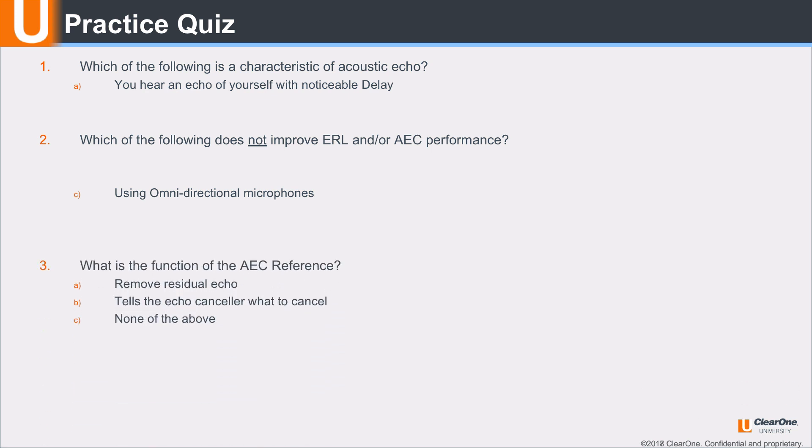Third question. What is the function of the AEC reference? The correct answer is B. The AEC reference tells the echo canceler what to cancel.